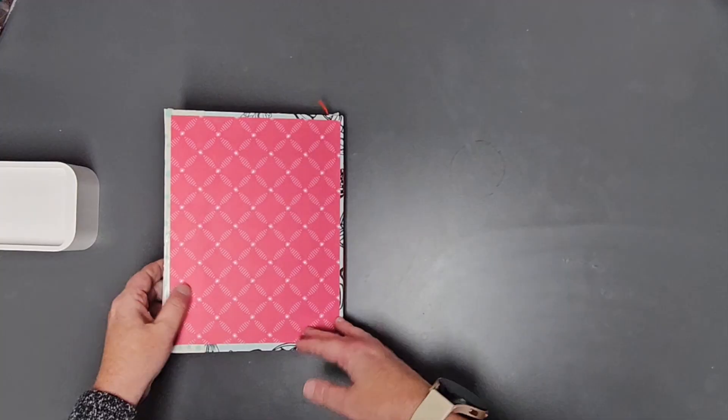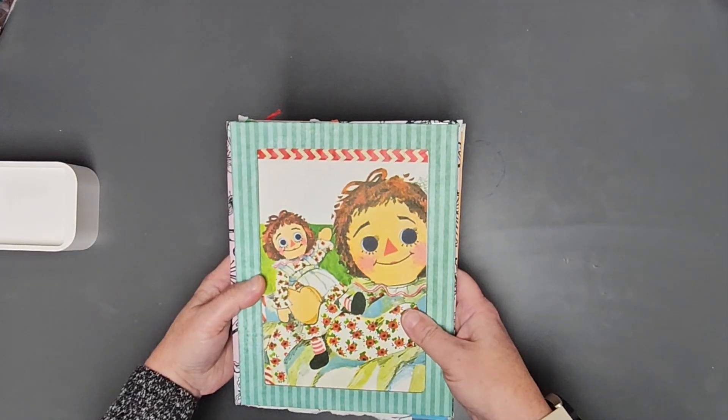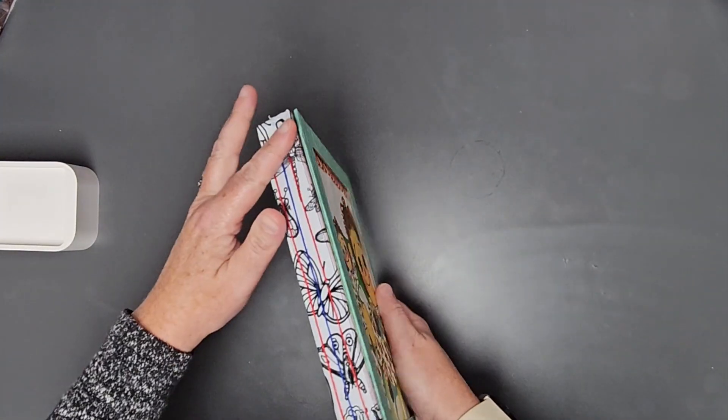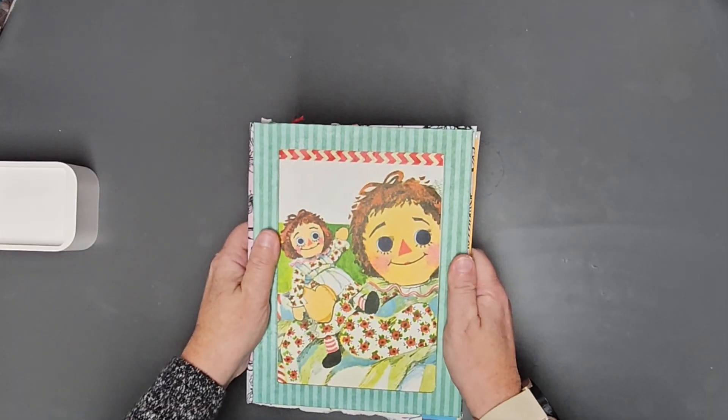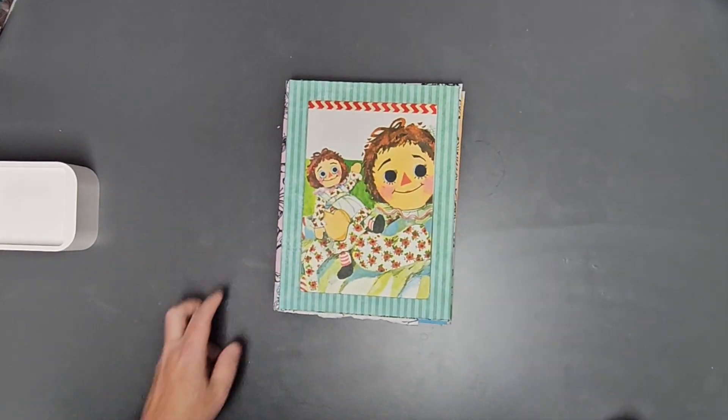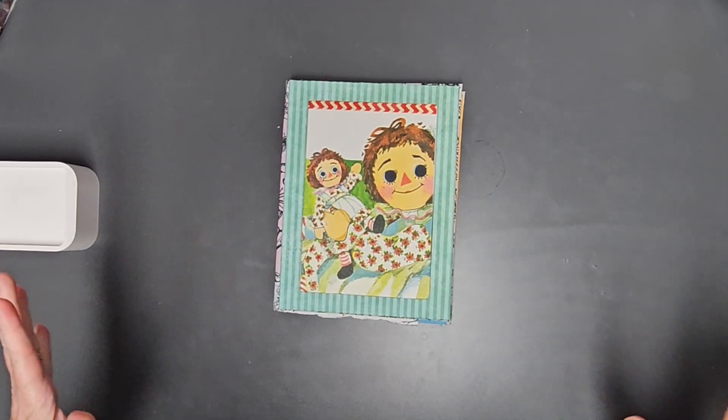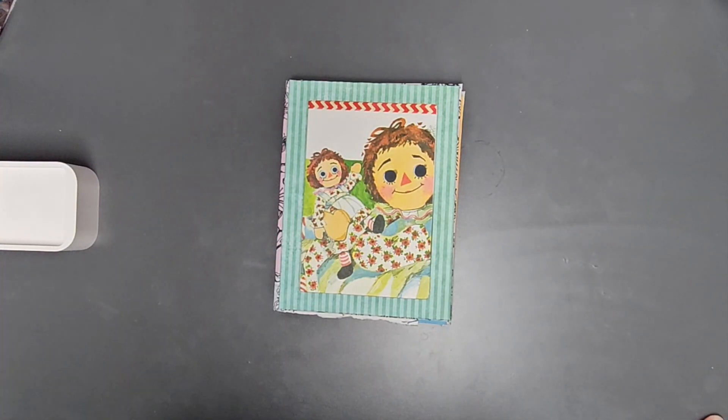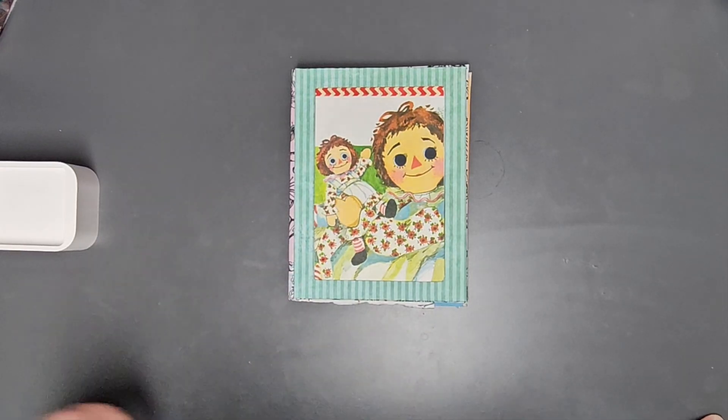Anyways, this is my lovely Raggedy Ann book. I love it, super cute. Again, it's a hardcover book, it is on my Etsy shop right now. This is the first video I've taken, it's been up there for a couple days, but hopefully with this video you can get a good look at it.